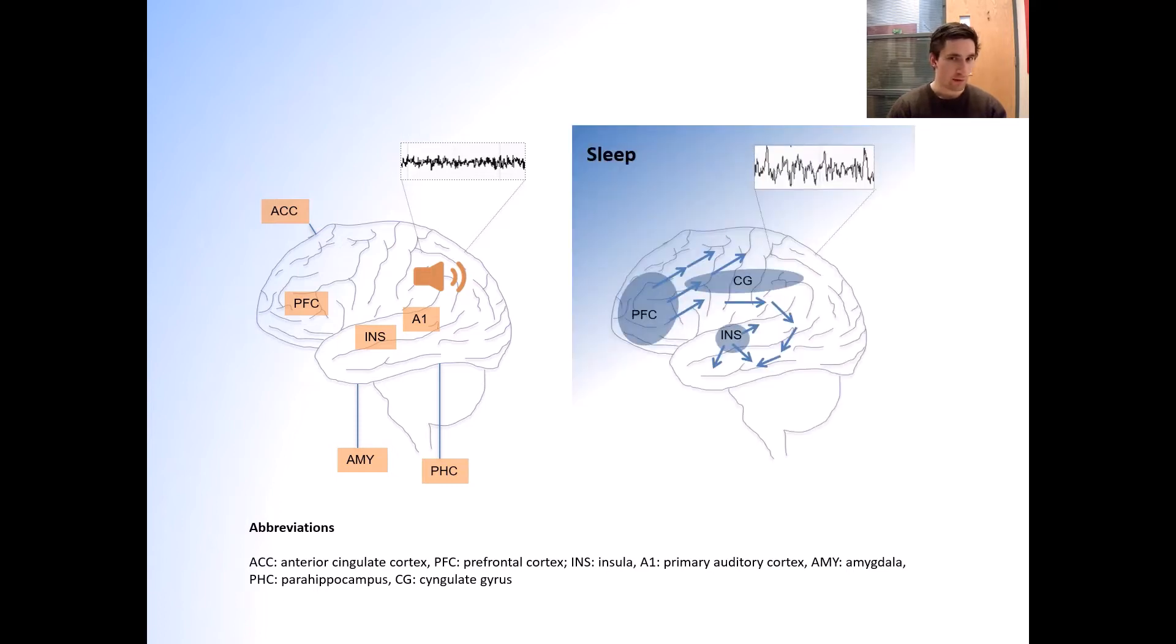However, there is another situation where the brain shows rather widespread alteration of spontaneous activity and this is during sleep. In particular during non-REM sleep, the state we spend most time in while we are sleeping, the brain produces this very stereotypical slow oscillating activity that spreads across the cortex. Importantly, this slow wave activity is present across many regions involved in tinnitus. This spatial overlap between tinnitus activity and sleep oscillatory activity has important implications.